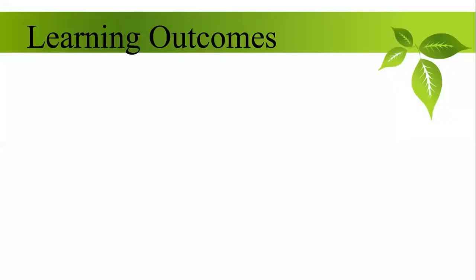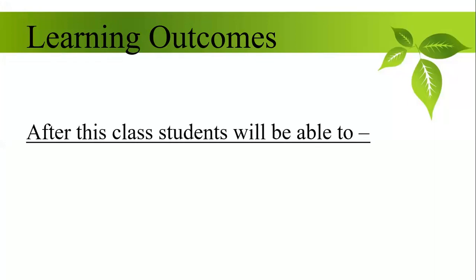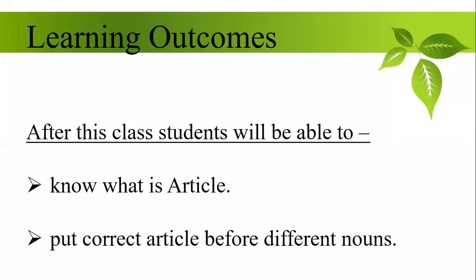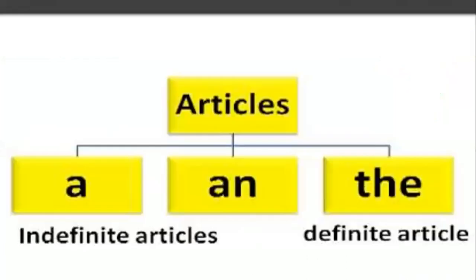Our learning outcomes: after this class, you will be able to know what an article is, and you will be able to put the correct article before different nouns. As you know, articles are of two kinds — indefinite articles and definite articles. Indefinite articles are 'a' and 'an', and the definite article is 'the'. We will just review this now.